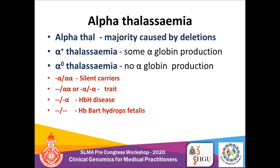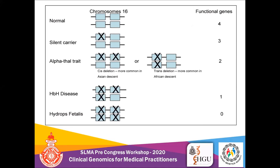HbBart's hydrops fetalis happens in severe thalassemia when there are no alpha chains to produce fetal haemoglobin. As a result, gamma globins form tetramers and precipitate in red cell precursors, leading to ineffective erythropoiesis. As a result, the fetus may demise due to hydrops fetalis from severe anaemia. Heterozygous carriers with both alpha-1 and alpha-2 deleted on one chromosome can give rise to hydrops fetalis because they produce no alpha chains.